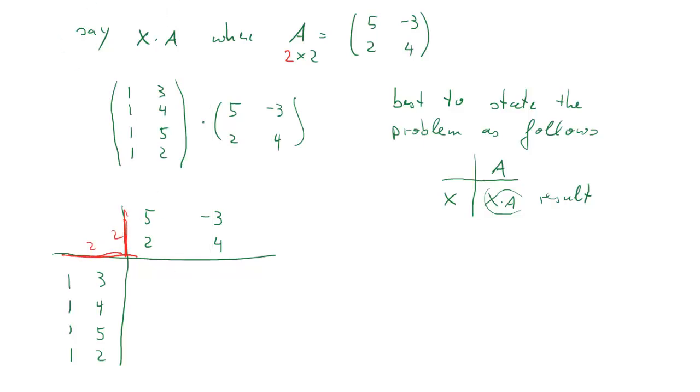What's important is that these inner two dimensions, number of columns of X and number of rows of A, are the same. We will end up with the result being a 4 by 2 matrix, 4 rows 2 columns, and you can already sort of visually see how that happens. The inner dimensions are going to cancel out because they are the same and we end up with 4 by 2. That's the dimension of the result.